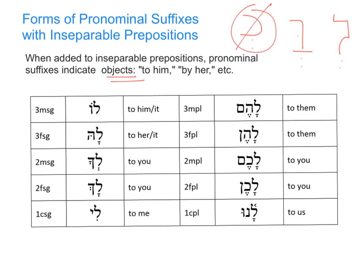Let's say this whole paradigm through a few times and then look at it internally. So from the top on the singular side: lo, la, lecha, lach, li. And on the plural side: lahem, lahen, lahem, lahen, lanu. So that's how it sounds. All of the translations are to him, to her, to you — or we can also say for him, for her, for you. What we're getting is our prepositions with our pronouns attached.